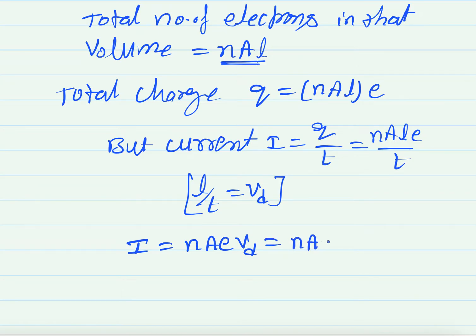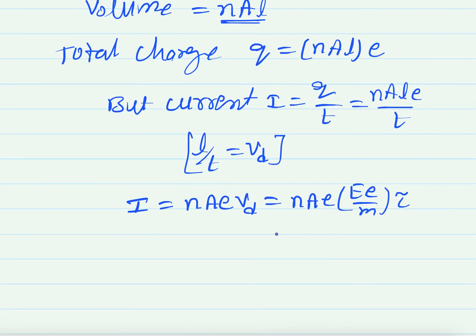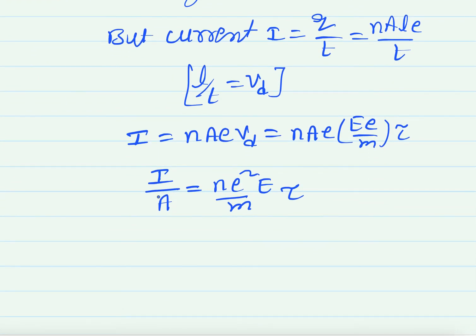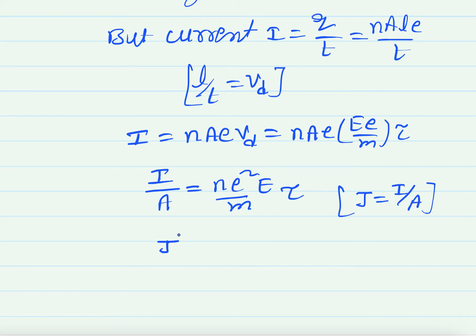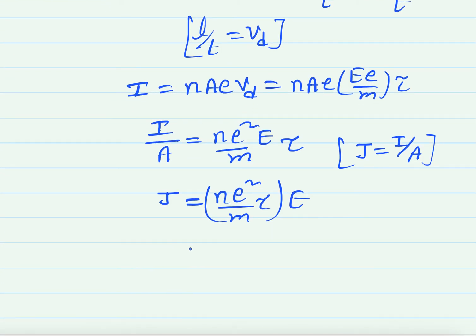Substituting the drift velocity formula, I equals n·e·A·vd, which gives n·A·e times (eE by m into tau). Rearranging, I by A equals n·e squared·E by m into tau. Now, I by A is nothing but current density j — current per unit area. So current density j equals (n·e squared·tau by m) into E.